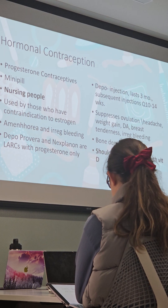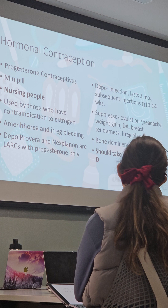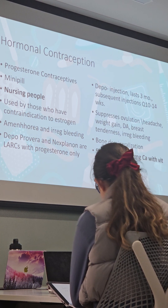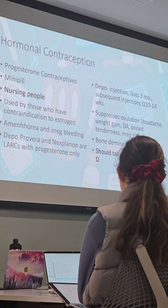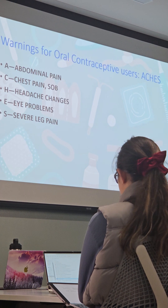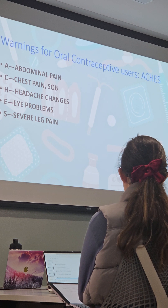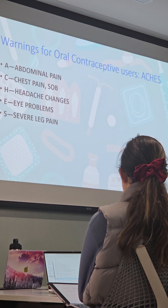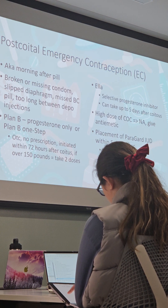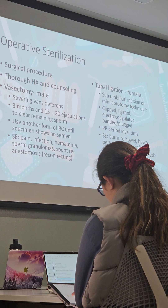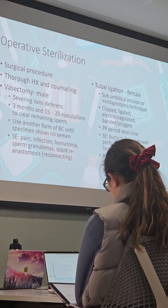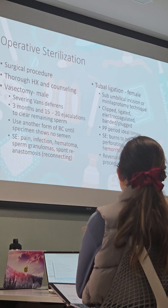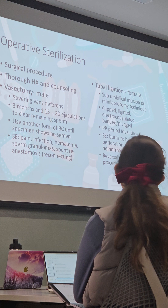These slides have content you really need to know — like which contraceptives you would recommend for nursing versus non-nursing people, what supplementation they should take, and signs and symptoms that are normal or that should be reported. Know the ACHES warning signs of oral contraceptives. Also know the teaching around sterilization: make sure somebody waits three months and goes through 20 ejaculations to clear remaining semen.